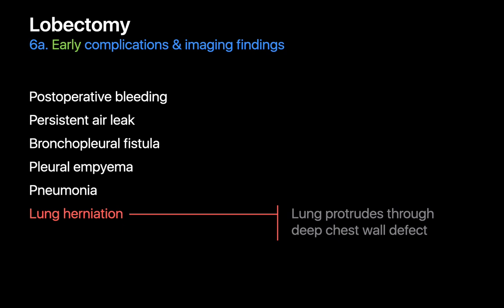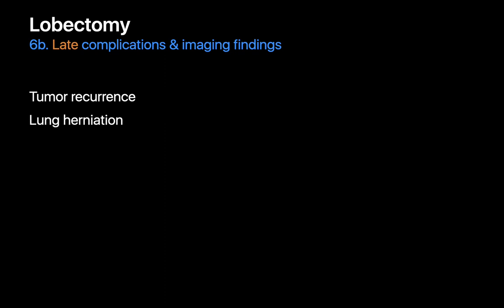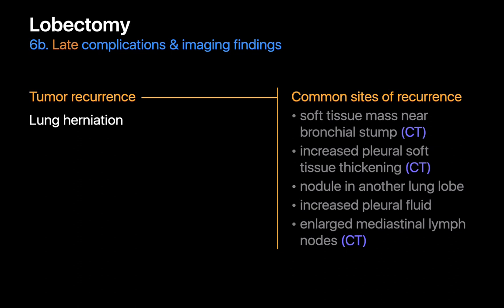Lung herniations are another complication that can occasionally occur if a chest wall defect created during surgery persists, allowing a portion of lung to protrude. Late complications post-lobectomy predominantly consist of lung herniations and tumor recurrence. A common site for local tumor recurrence is the bronchial stump, but recurrence can also present in the pleural space as increased pleural soft tissue thickening or increasing pleural effusion, as a new nodule anywhere in the remaining lung tissue, or as growing mediastinal lymph nodes on chest CT.